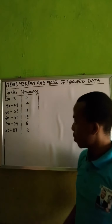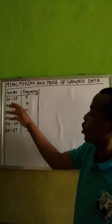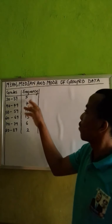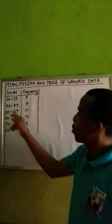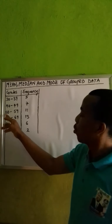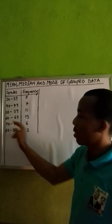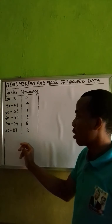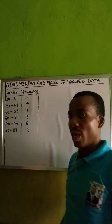So we have a question before us. From this data we can see the grades of pupils: 5 pupils scored within the range of 30 to 39, 7 pupils scored within the range of 40 to 49, 11 pupils scored within the range of 50 to 59, 13 pupils scored within the range of 60 to 69, 6 pupils scored within the range of 70 to 79, and 2 pupils scored within the range of 80 to 89.